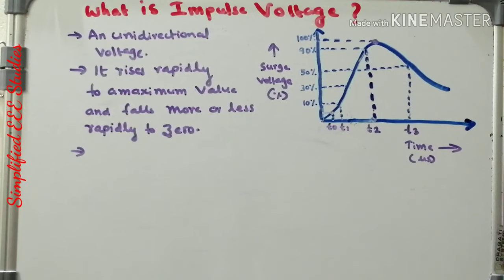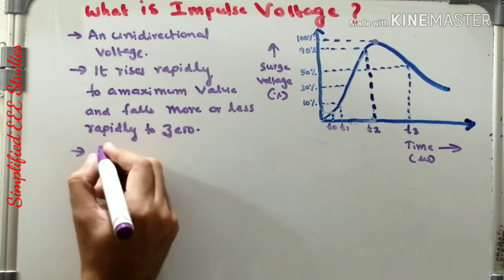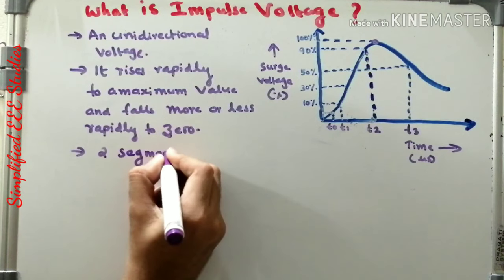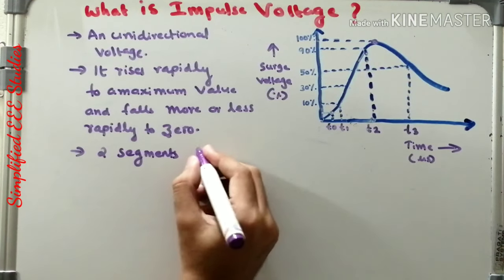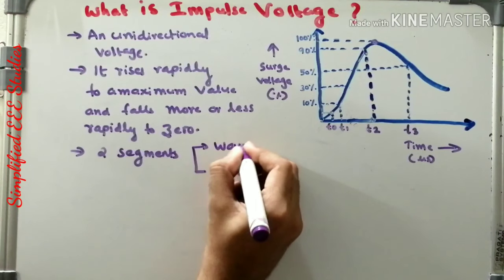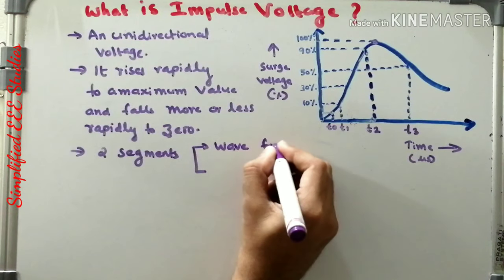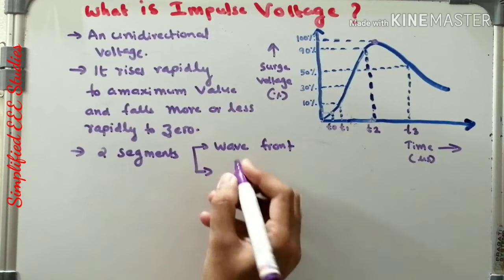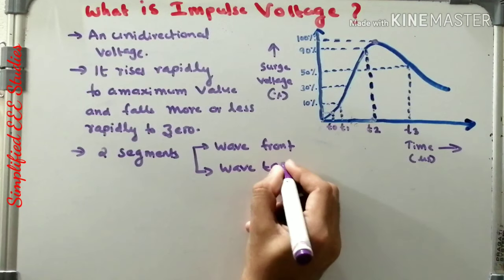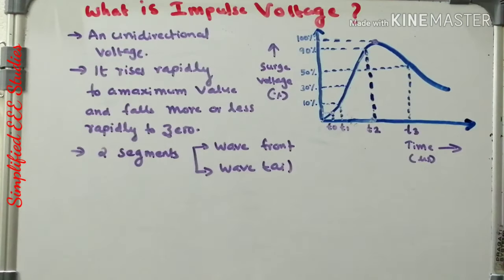Impulse voltage comprises two segments. The first segment is wavefront and the second segment is wavetail. Let us have a brief discussion on wavefront and wavetail.